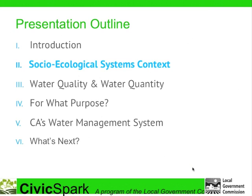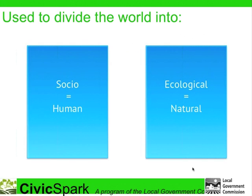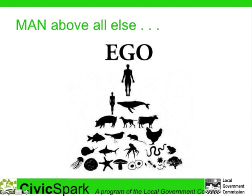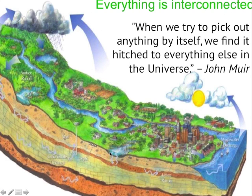This brings us to our next point: socio-ecological systems. Historically, the Western civilized world has divided our mindset into socio, or the human realm — things that are man-made — and ecological, or the natural world. Man was believed to be the highest evolved creature, greater than all other organisms, including women, as depicted in this image. Women, apparently, are equal with whales, only slightly greater than dogs, and men are able to control the entire natural world. Thankfully, we know that is not true.